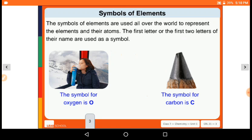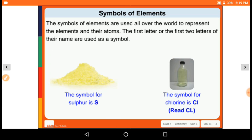First, symbols of elements. The symbol of an element is used all over the world to represent the element and its atoms. The first letter or the first two letters of the name are used as a symbol. For example, oxygen is represented by capital O, and carbon is represented by capital C. The symbols are used all over the world to represent the elements and their atoms.